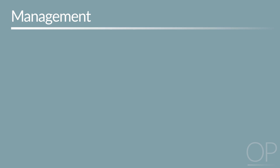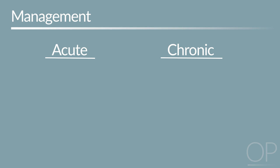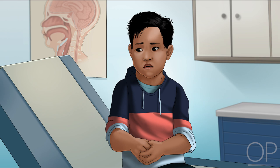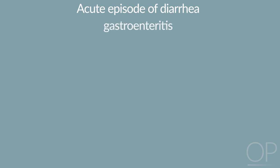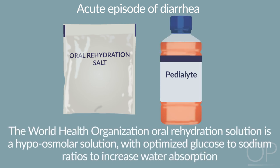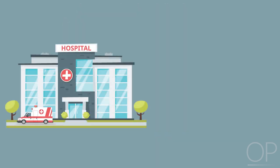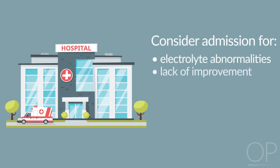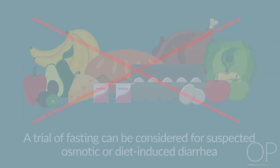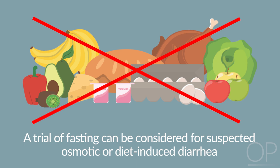Management. Management of diarrhea depends on whether the diarrhea is acute or chronic. For acute diarrhea, management is supportive and focuses particularly on rehydration. For chronic diarrhea, management depends on treating the underlying cause if known or possible. Most commonly, children with diarrhea can be managed with supportive care in the outpatient setting. If it is an acute episode of diarrhea such as gastroenteritis, they can be managed with oral rehydration solution to preserve hydration status. The WHO Oral Rehydration Solution is hypoosmolar with optimized glucose-to-sodium ratios to increase water absorption through the sodium-glucose co-transporter SGLT-1 and sodium-coupled amino acid transporters.